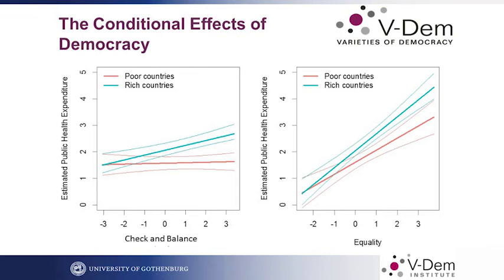That doesn't mean that in rich countries democracy is not important. We can imagine that in rich countries people have more private resources, so they can spend their own resources on their health. Even though the state may not provide infrastructure, they still have resources to improve their health. But in poor countries, democracy is really necessary to push politicians to provide benefits to their citizens — to spend money, to provide healthcare and good food — so in poor countries we find this effect of democracy is especially pronounced.